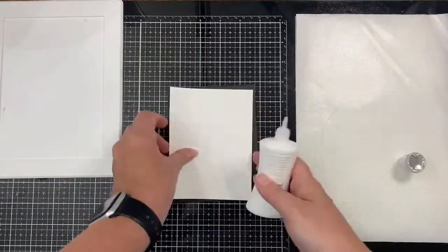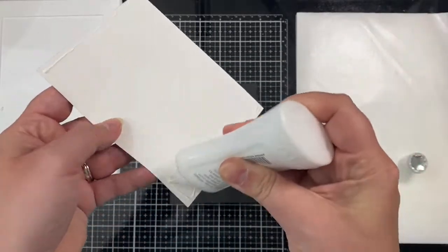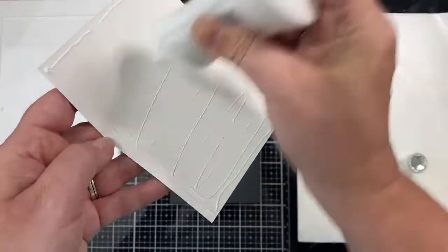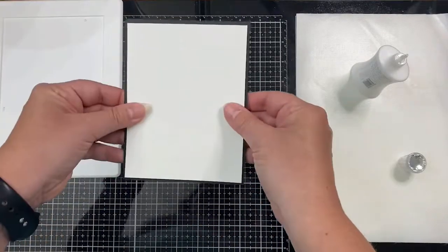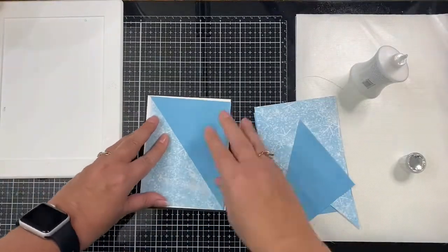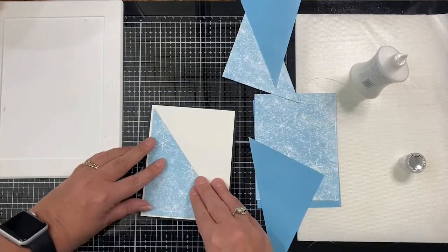I'm gluing down the white mat using some Nuvo deluxe adhesive which will allow me a little bit of time to scoot it directly in the center where I want it. Then next I'll be taking my two triangle pieces and lining them up to make sure I have the same amount of white space on each side.